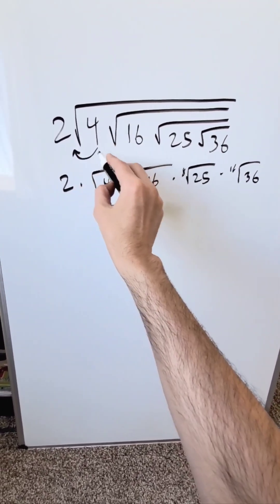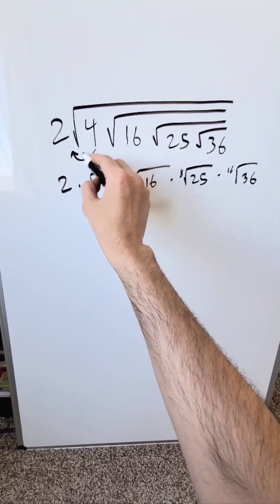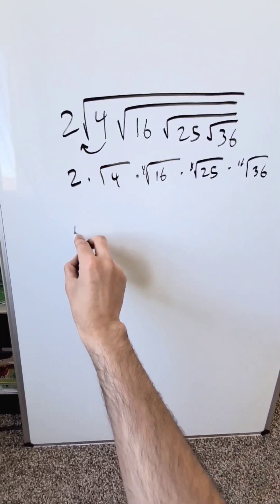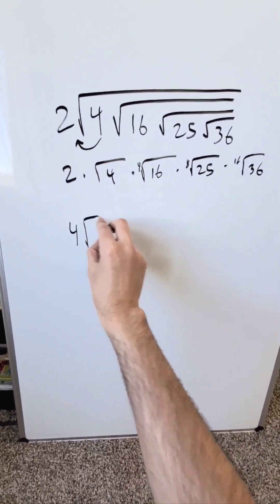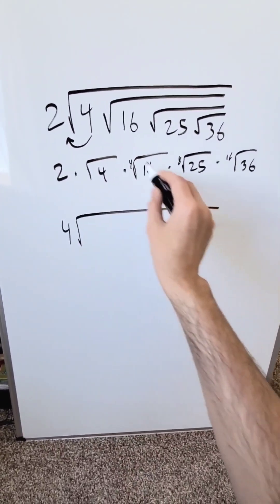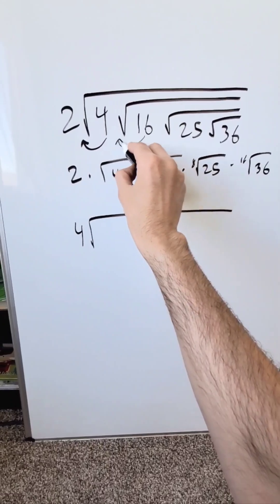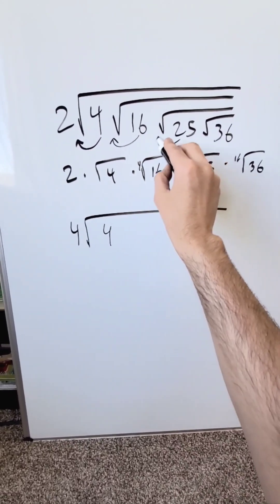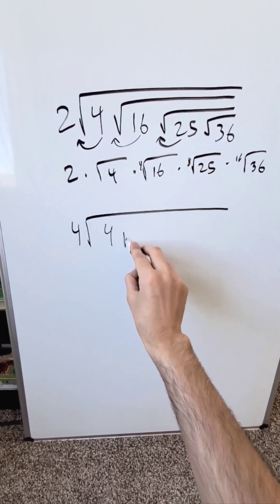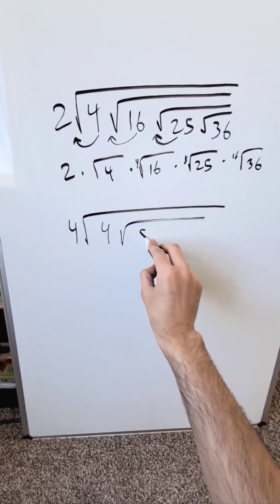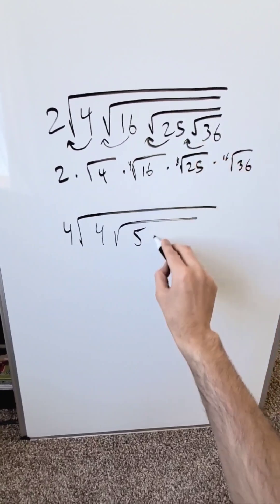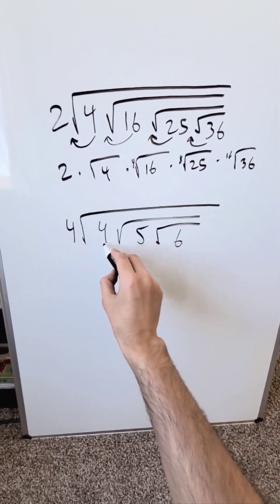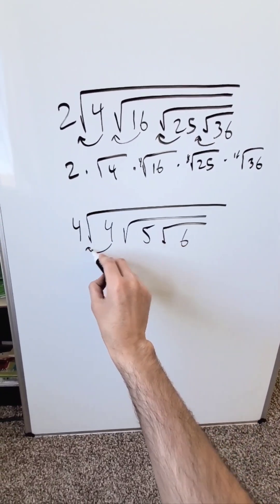Work from outside inwards. The 4 comes out as a 2, which multiplies with that — you have a 4. Now starting with the 16, it comes out as a 4. And 25 comes out as a 5, and 36 comes out as a 6. You have this, but you can simplify this 4 and bring it out.